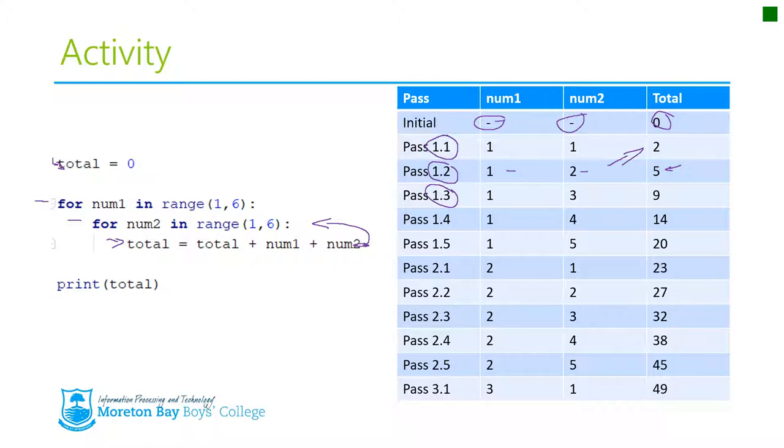num1 is still 1, num2 is 3. Add 1 and 3 to 5, and that will give you 9. And again, next time we've done this, we go back here, because we still haven't hit 6. Yep, we haven't hit 5 yet.